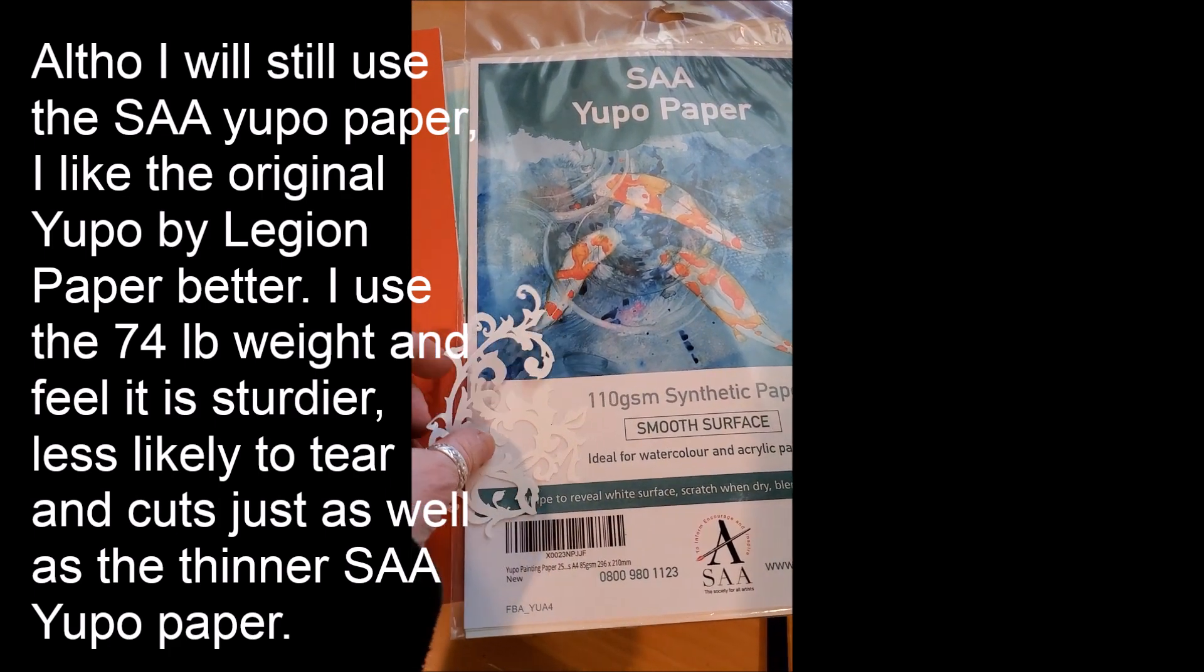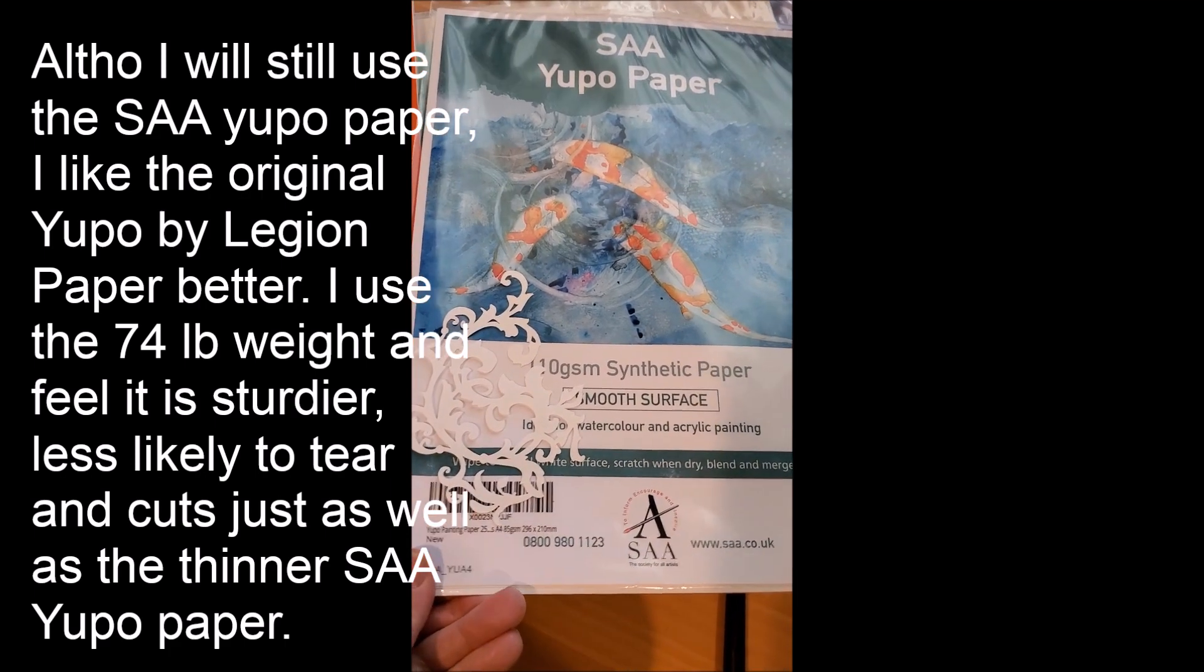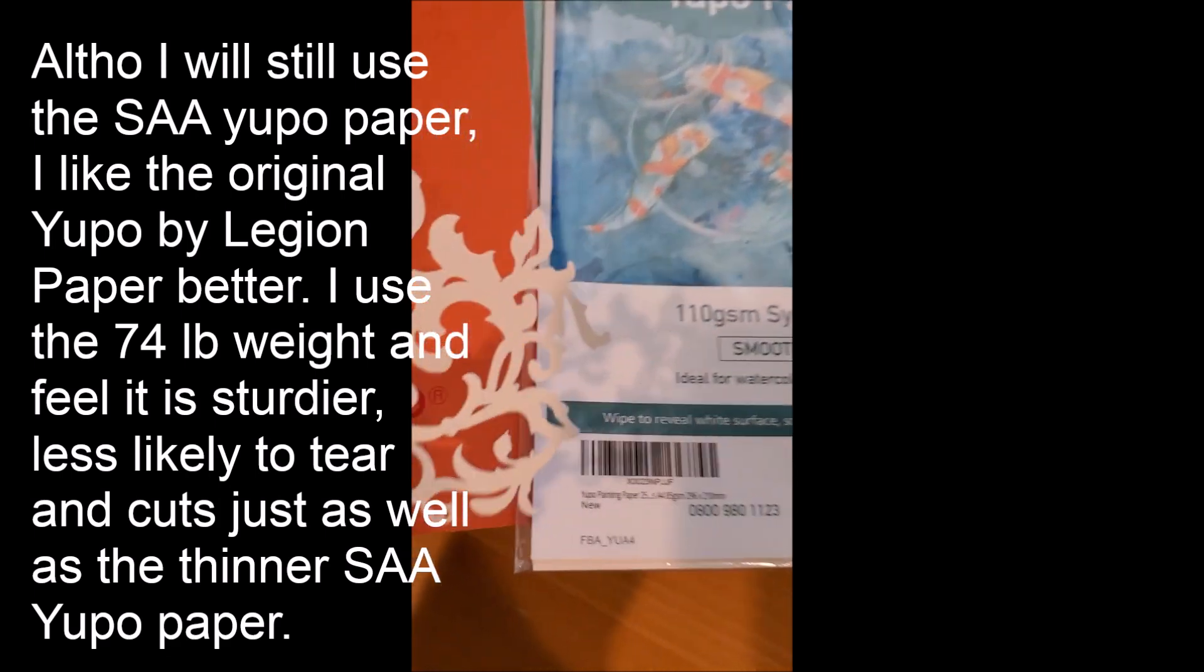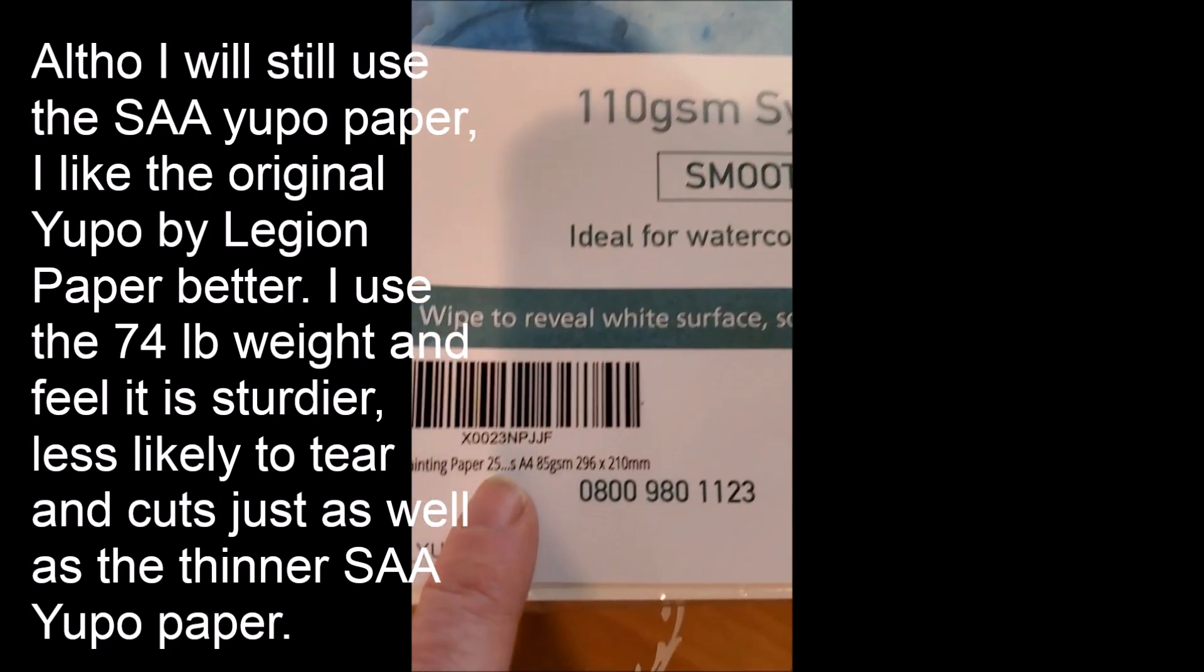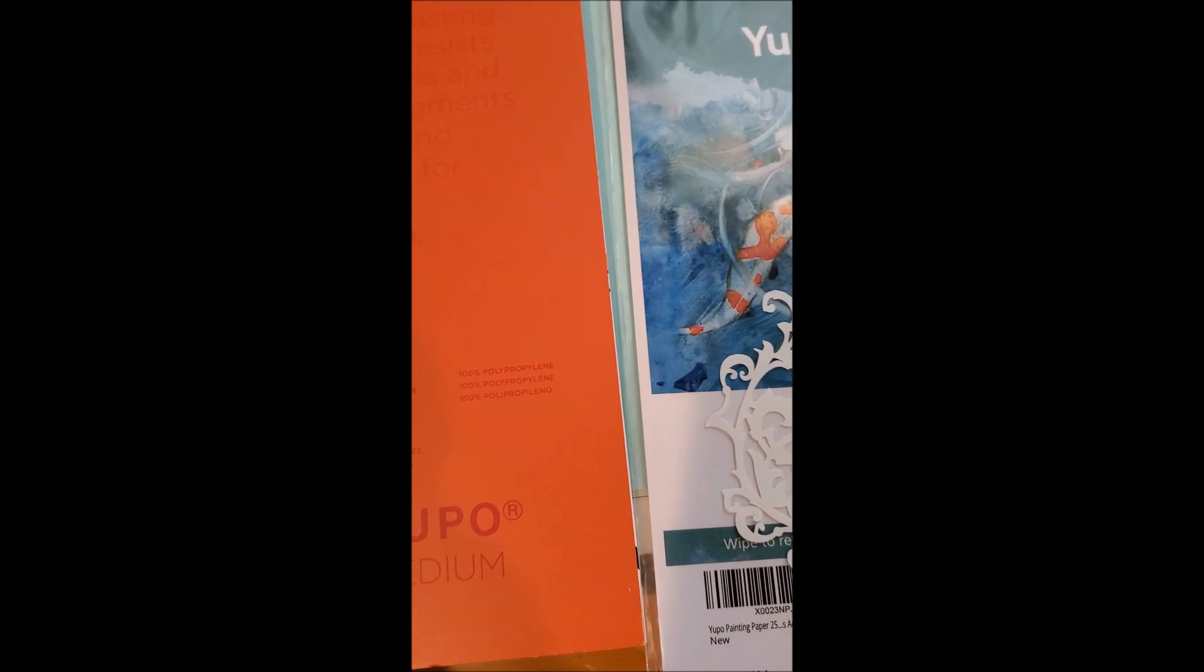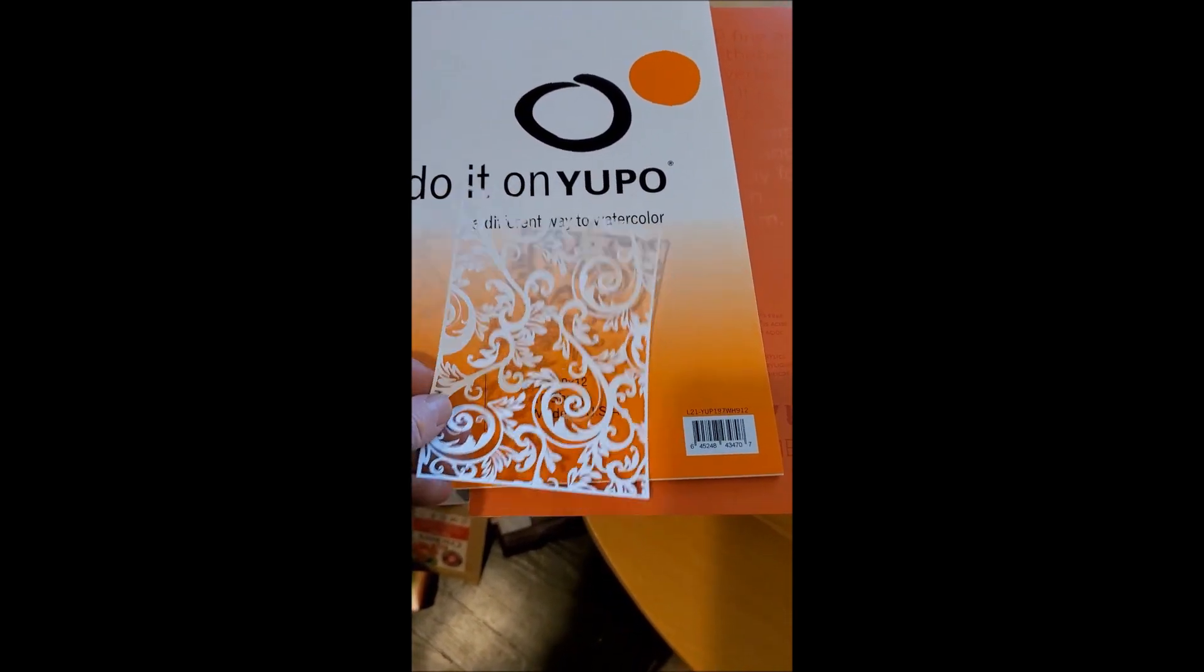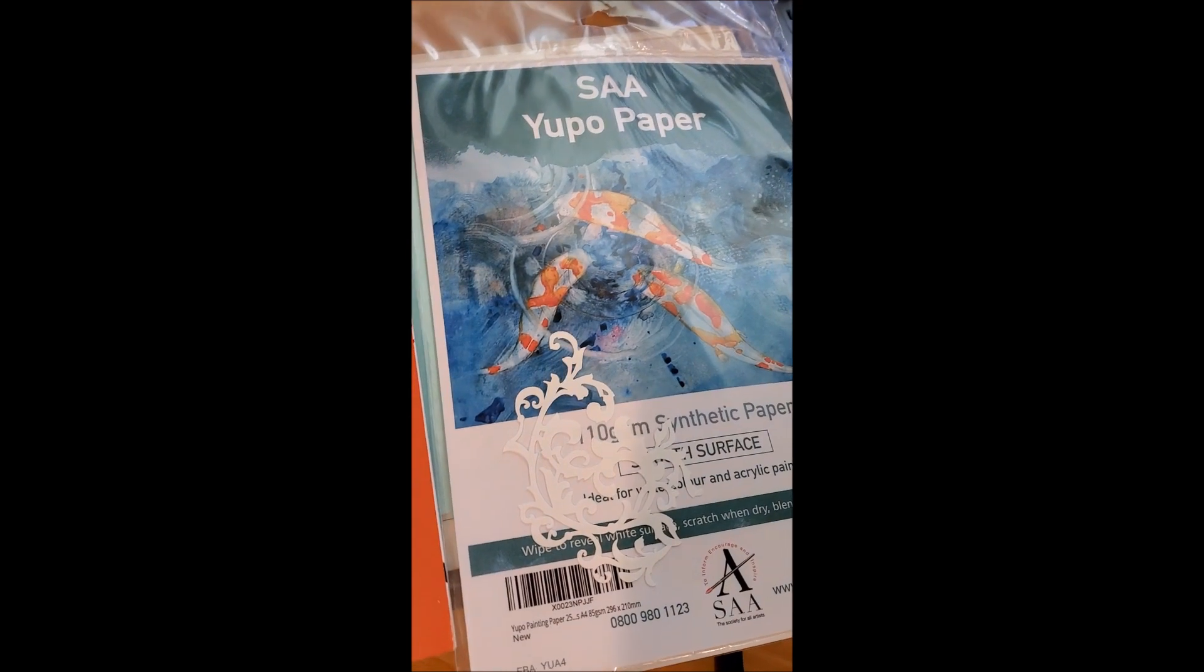I'm back. And so I wanted to just kind of finalize and sum up my experience with this Yupo paper. So this SAA Yupo paper, it seems like it's kind of a knockoff maybe from the regular Yupo paper. It's much thinner, and it's 85 GSM. It's much thinner than the Yupo paper that I had used before. And so this is the original Yupo paper that I had, very detailed cuts, but this is definitely thicker and sturdier than the other Yupo paper.